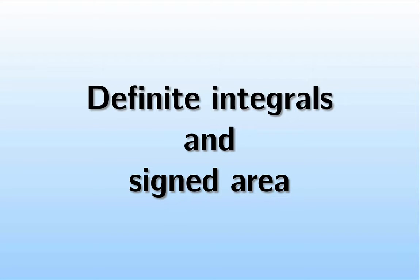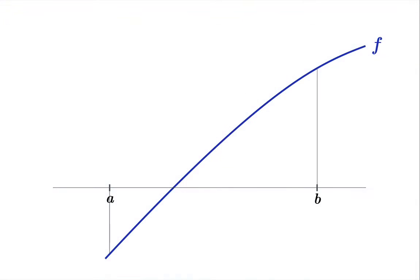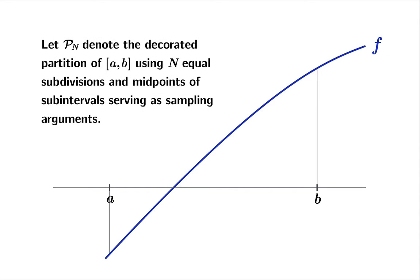Let's talk about definite integrals and signed area. Here we have a function f, continuous on the interval from a to b. And we're going to let P_N denote the decorated partition of the interval a to b using n equal subdivisions and midpoints of subintervals serving as sampling arguments.